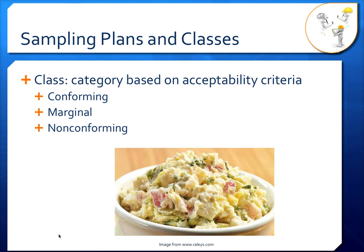A class is a category based on acceptability criteria. There are three possible classes: conforming, marginal, and non-conforming. Let's take a look at two-class and three-class sampling plans in more detail so we understand these classes or categories better.